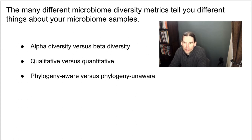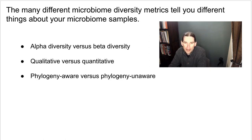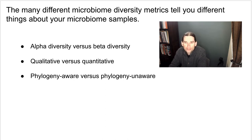That is in contrast to beta diversity, which is typically thought of as between-sample diversity. You would usually compute that on pairs of samples from your feature table. For alpha diversity, you would typically end up with a vector of alpha diversity values with one value per sample. With beta diversity, we would typically compute that on all pairs of samples, ending up with a distance matrix presenting the distances or dissimilarities of pairs of samples.